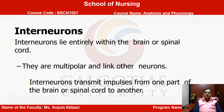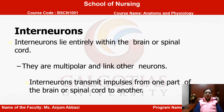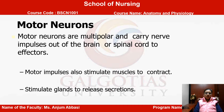The second type is interneurons. Interneurons lie entirely within the brain or spinal cord. They are multipolar and link other neurons. Interneurons transmit impulses from one part of the brain or spinal cord to another.